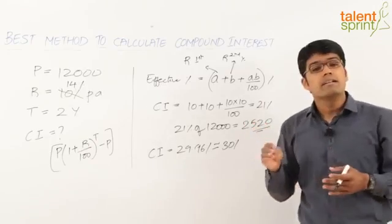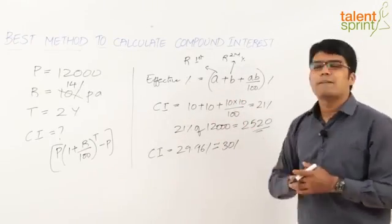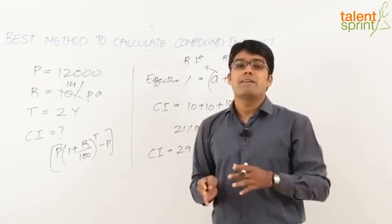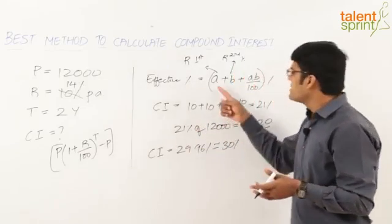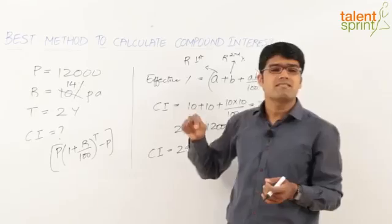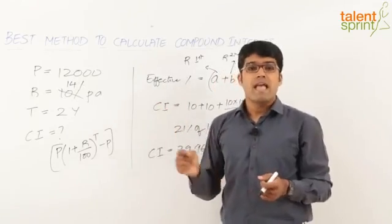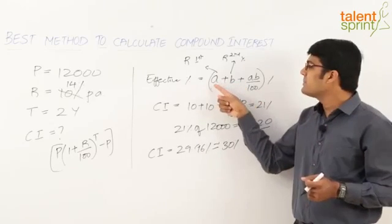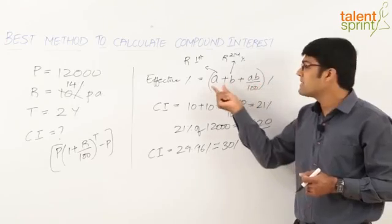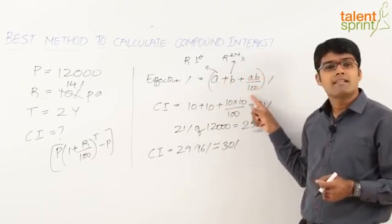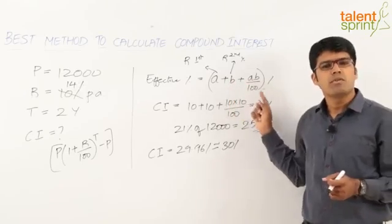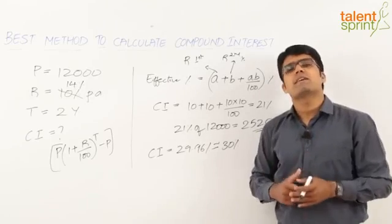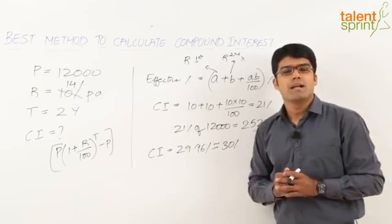This is how we calculate compound interest using effective percentage. An important point: if the rate of interest is different for different years, we just substitute the values accordingly. For example, if the rate is 10% for the first year and 12% for the second year, then a = 10 and b = 12, giving us 10 + 12 + (10 × 12)/100 = 22 + 1.2 = 23.2%. So 23.2% of 12,000 gives the answer.